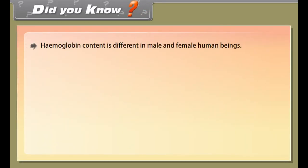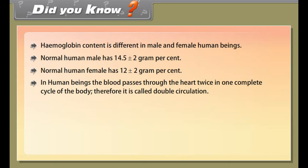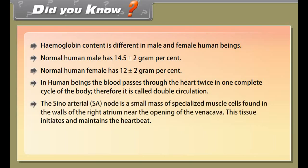Did you know? Hemoglobin content differs between males and females: normal human males have 14.5 ± 2 g%, while normal human females have 12 ± 2 g%. In humans, blood passes through the heart twice in one complete cycle of the body, which is why it is called double circulation. The sino-atrial (SA) node is a small mass of specialized muscle cells in the walls of the right atrium near the opening of the vena cava; it initiates and maintains the heartbeat. When it fails to function, an electronic device called a pacemaker is implanted into the chest of the patient to maintain the heartbeat.